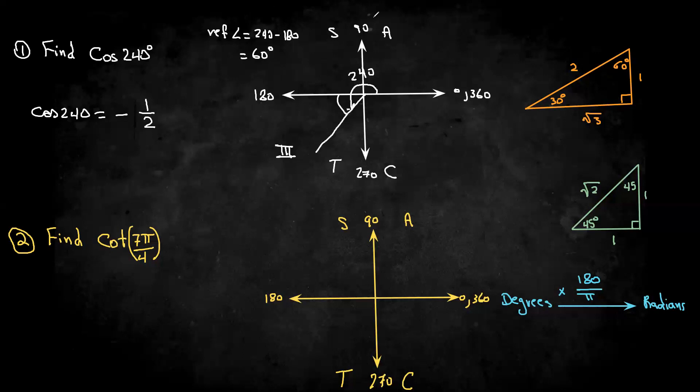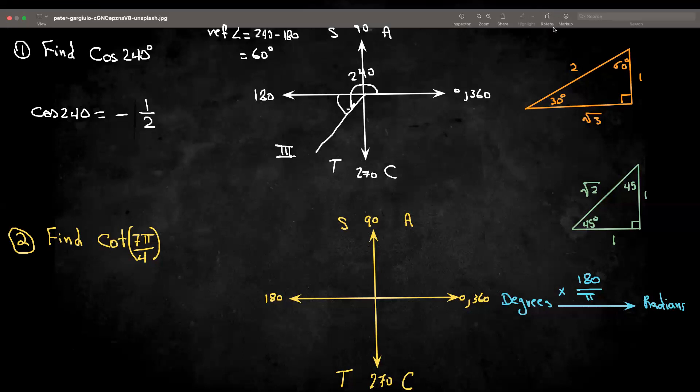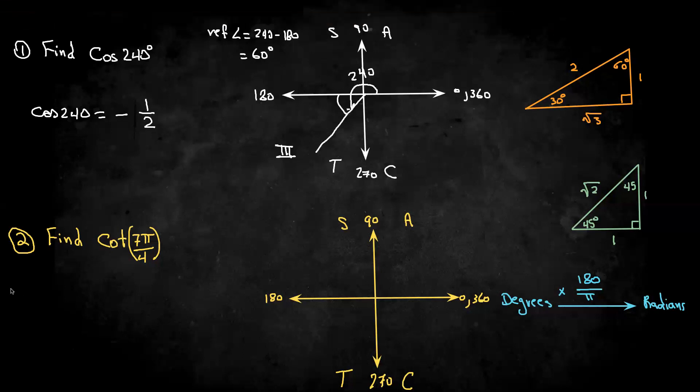Now how about in the second one here? So I think it's a good idea to convert the 7 pi over 4 to degrees by multiplying it by 180 over pi. So the pi's would cancel here. 4 goes into itself once, it goes into 180 45 times. 7 times 45 is going to be 315.